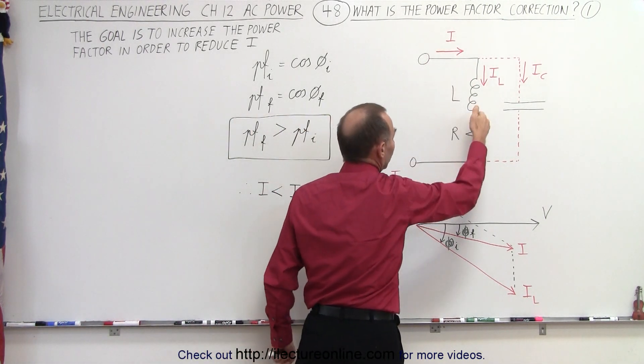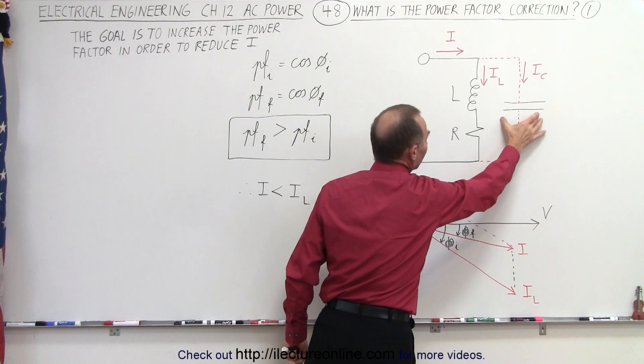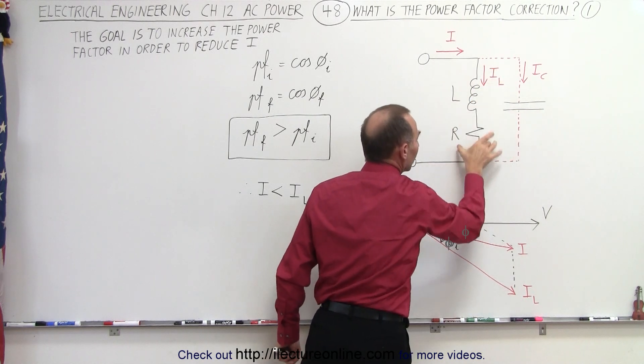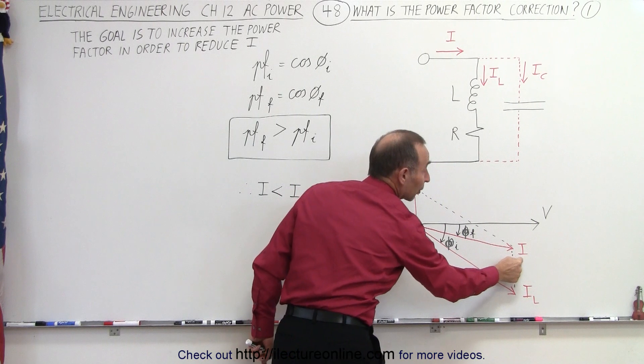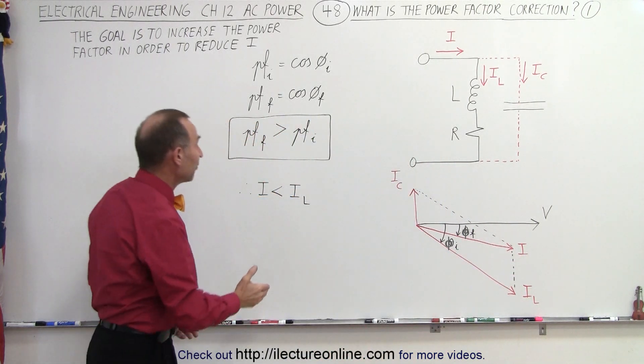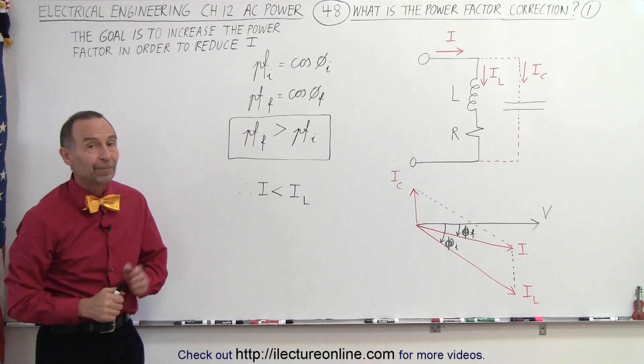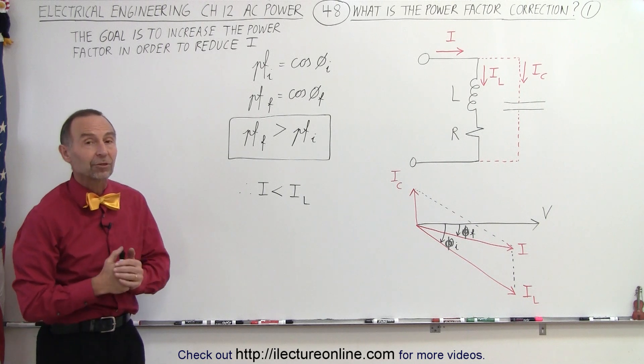We can offset the larger current requirement by putting a capacitor in parallel to the original load, therefore reducing the current requirement in order to provide the same amount of power to the load. That's what we call power factor correction.